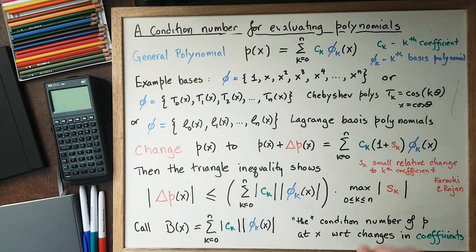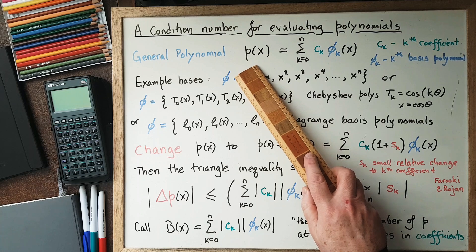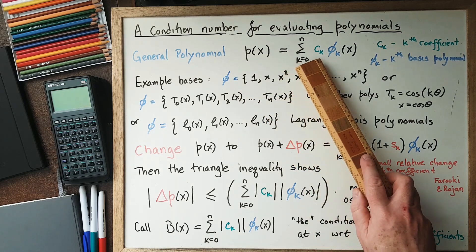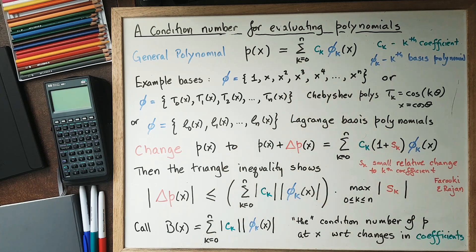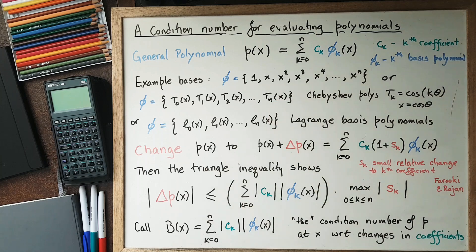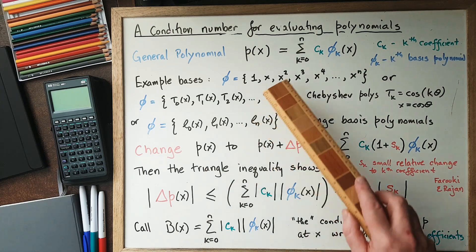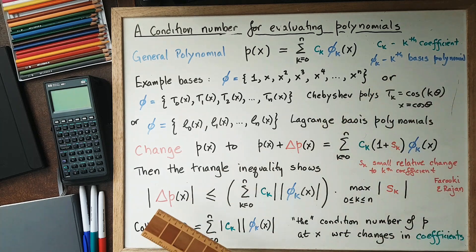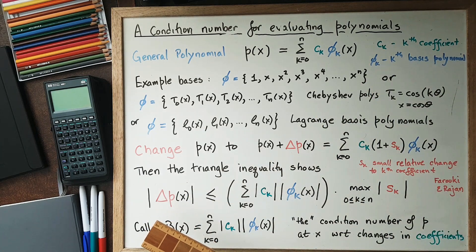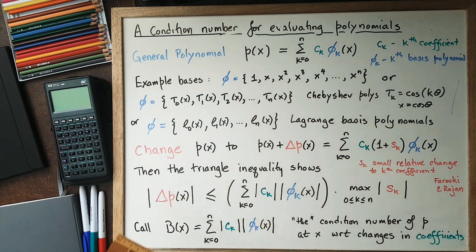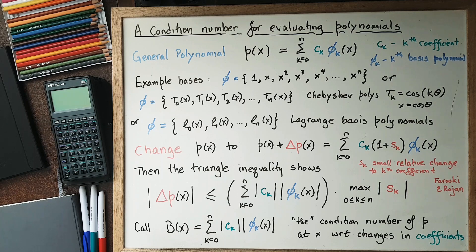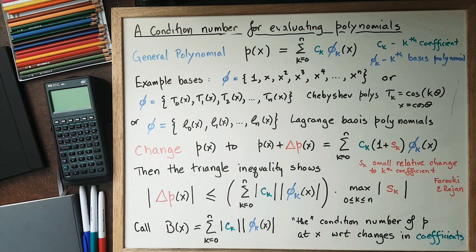A general polynomial P(x) is a sum of coefficients c_k times basis polynomials φ_k(x), where c_k is the kth coefficient, k running from 0 to n. The basis polynomials can be anything we happen to be using. It's very standard to use the monomial basis: φ_0 is 1, φ_1 is x, φ_2 is x², φ_3 is x³, and so on up to φ_n is x^n.